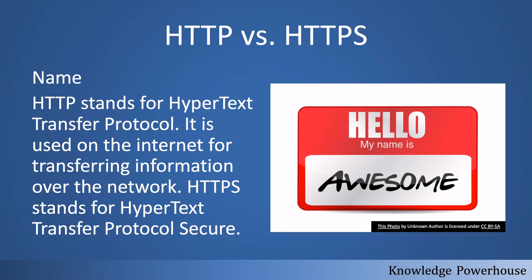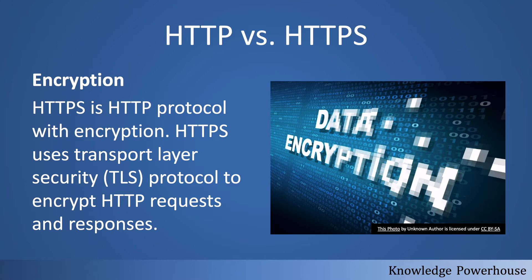HTTP is an application-level protocol used for transferring information over the network, whereas HTTPS does the same work but it is Hypertext Transfer Protocol Secure — it adds security to the existing HTTP protocol. The first key difference is encryption: in HTTP there is no encryption, meaning you are responsible for doing encryption yourself.